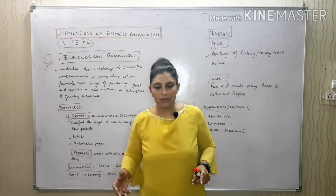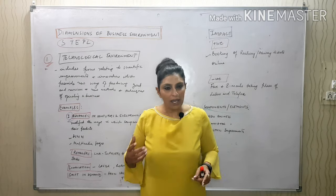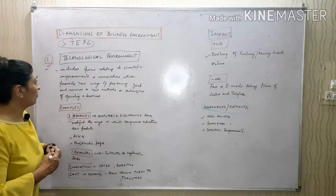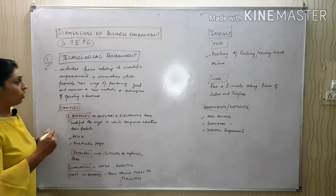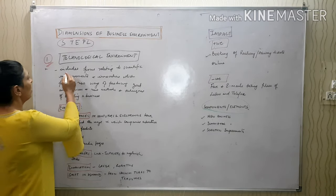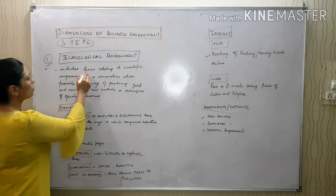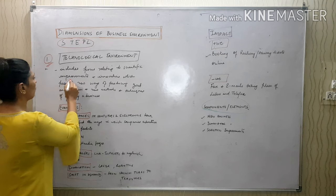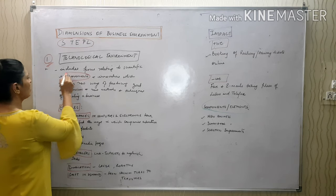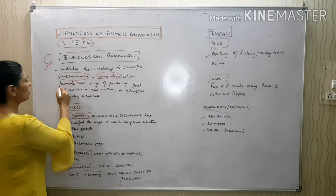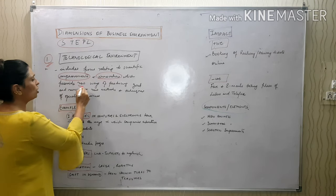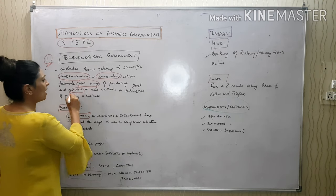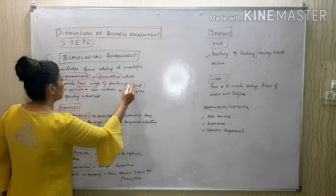The meaning of technological environment: it includes forces relating to scientific improvements and innovations which provide new ways of producing goods and services and new methods and techniques of operating a business.